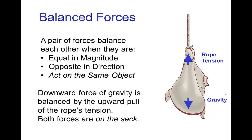Let's think about balanced forces. A pair of forces balance each other when they're equal in magnitude, opposite in direction, and acting on the same object. Here's an example: a sack hanging from a rope. We have the force of gravity pulling the sack down and the tension in the rope exerting an upward force on the sack. There's no acceleration, so we know those two forces are in balance.